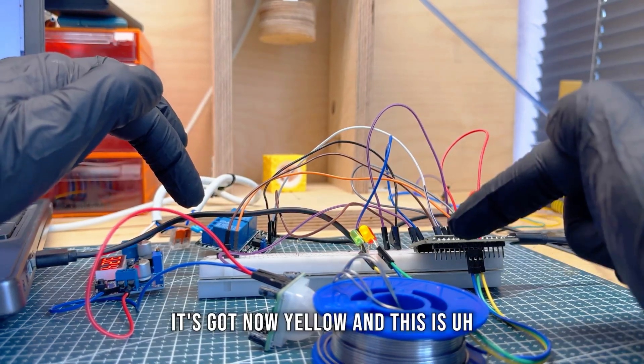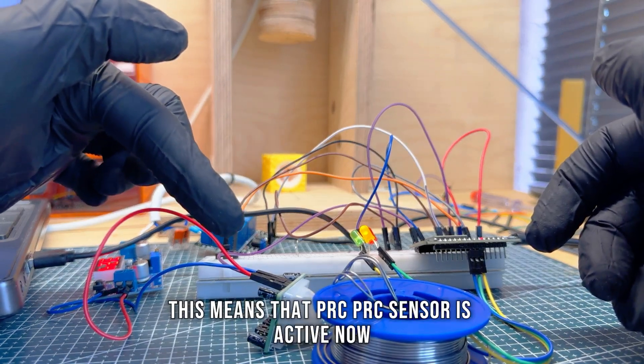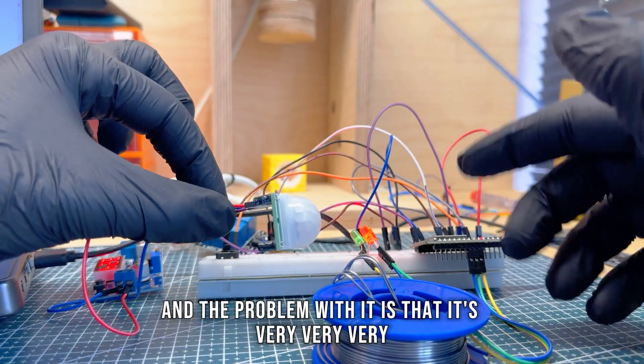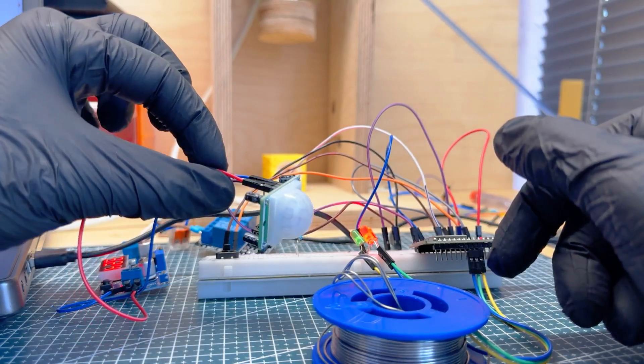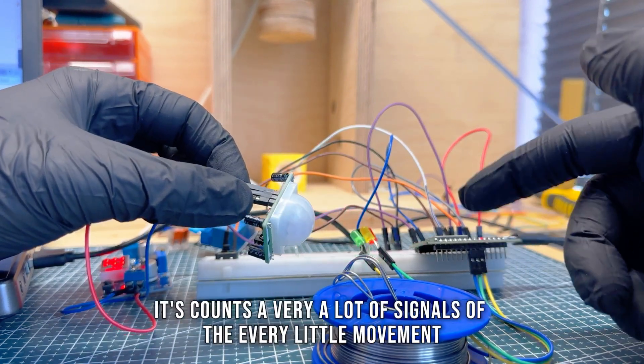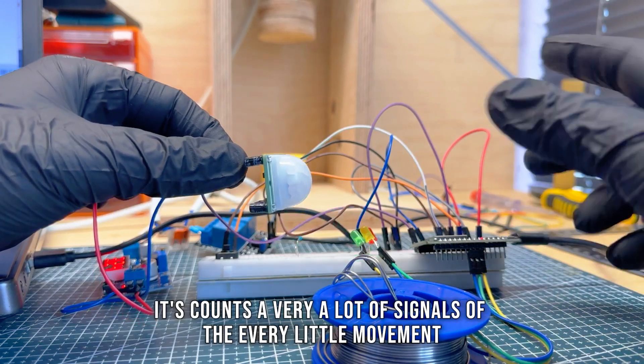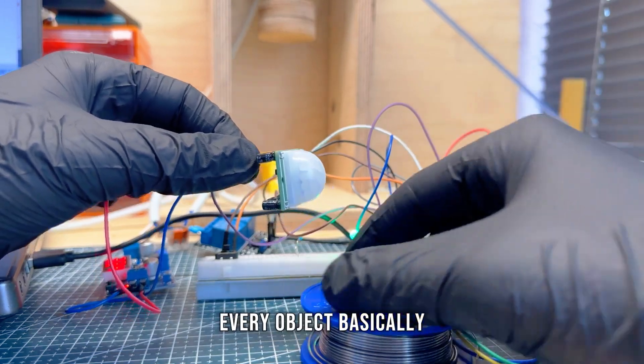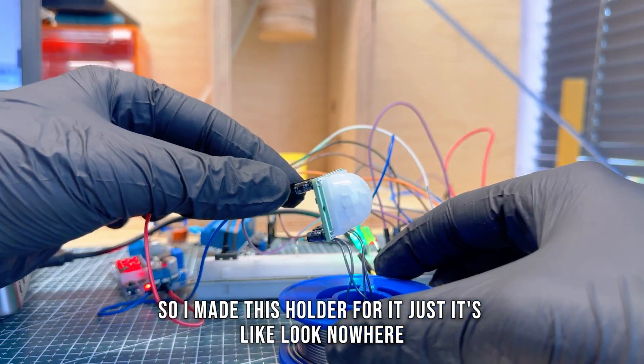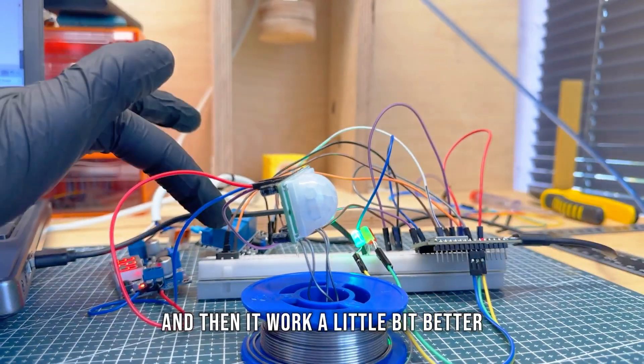It's now yellow, and this means that the PIR sensor is active now. And the problem with it is that it's very sensitive. It counts a lot of signals over every little movement, every object basically. So I made this holder for it, just so it's looking nowhere, and then it works a little bit better.